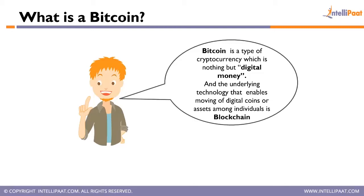It is extremely important to differentiate between Bitcoin and blockchain because they are two different things. If you understand object-oriented technology, you can think of blockchain as a class — when you create an instance of that class, you get an object like Bitcoin or Ethereum. That is the relationship between blockchain and its implementations.